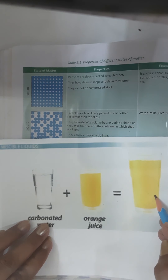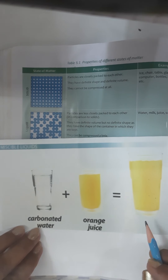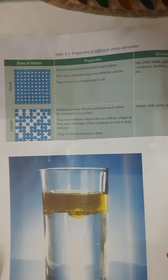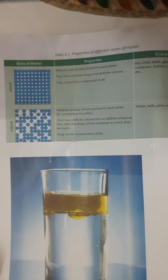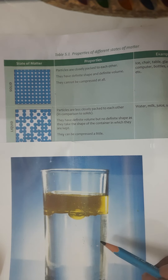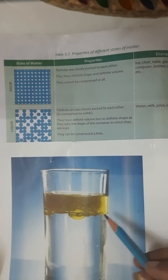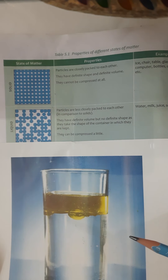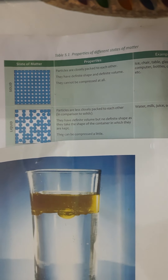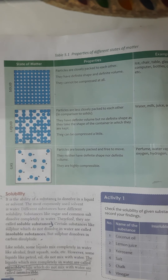For example, when we add water into orange juice, it fully mixes — this is a miscible liquid. But when we add mustard oil into water, we find that the oil floats on the surface of the water because oil is less dense than water. These liquids that do not dissolve in water are called immiscible liquids.